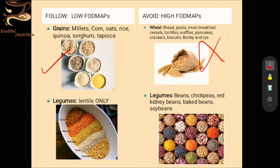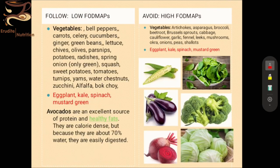When it comes to legumes, we are going to choose only lentils — dehusked, without skin. We are going to avoid all sorts of whole pulses, because whole pulses along with their outer skin covering have a lot of insoluble fiber which can cause problems. So we will only prefer lentils.